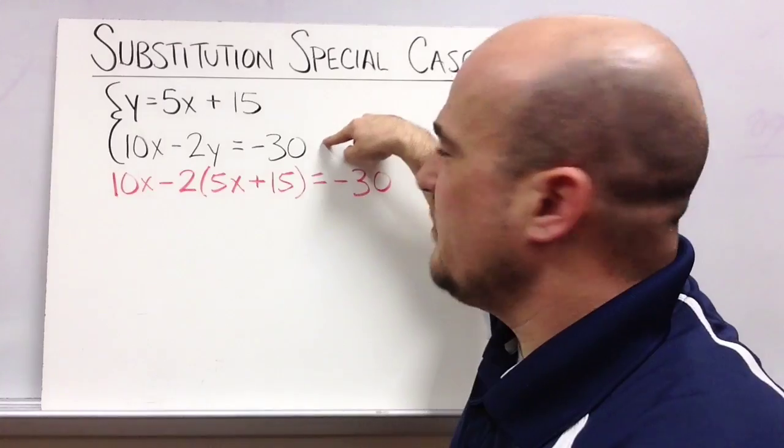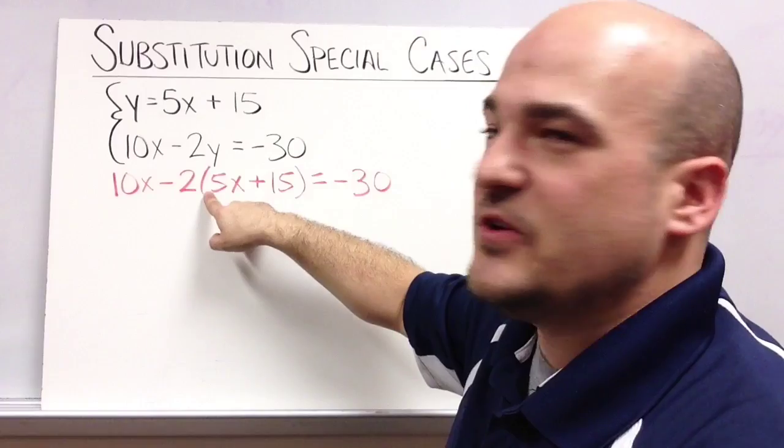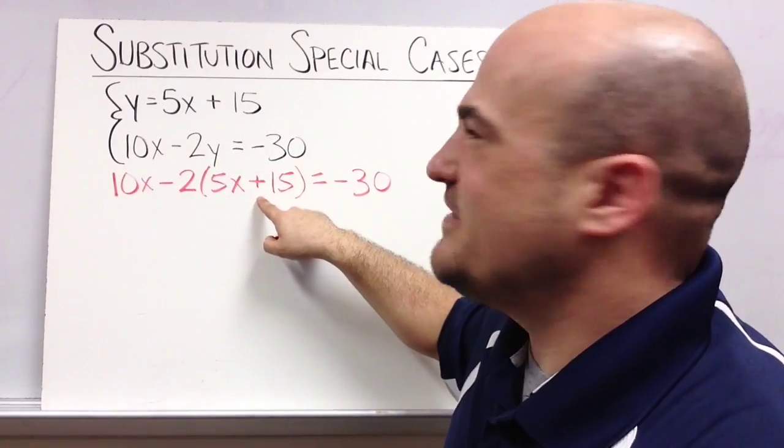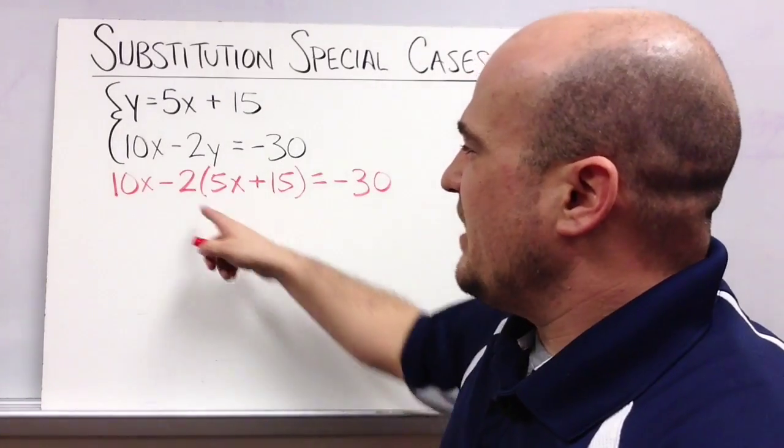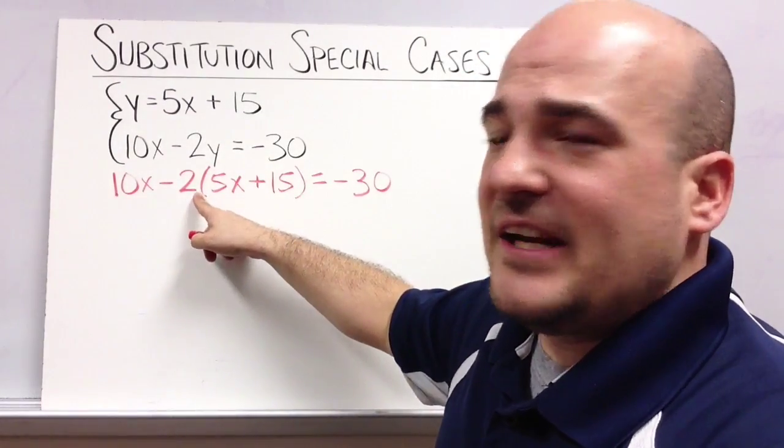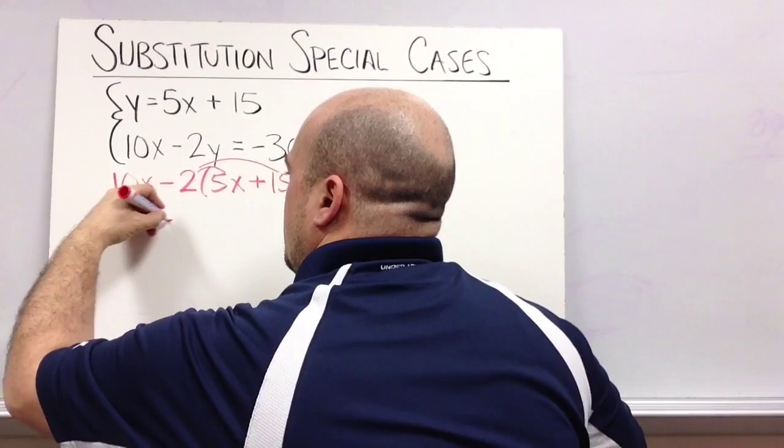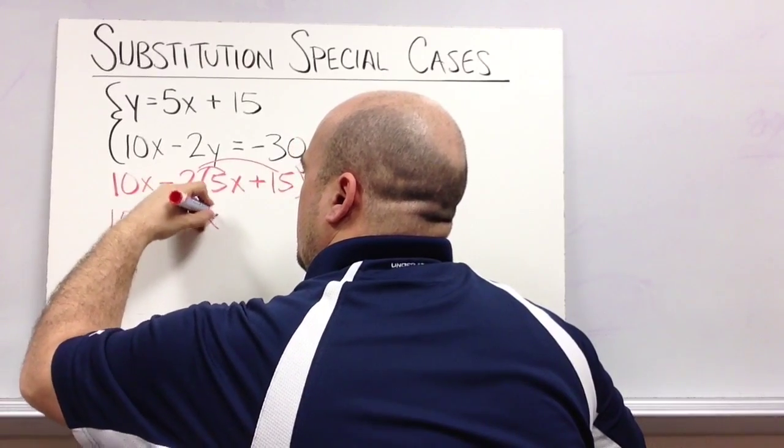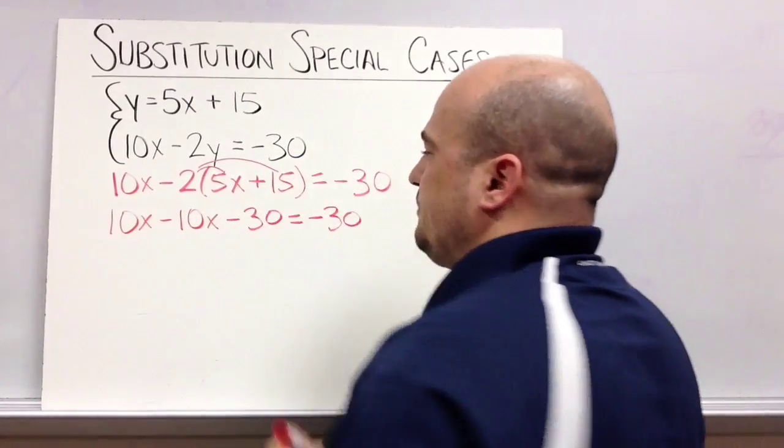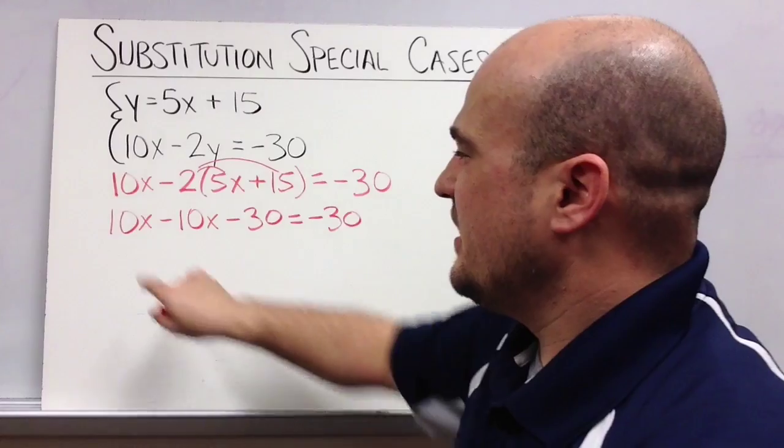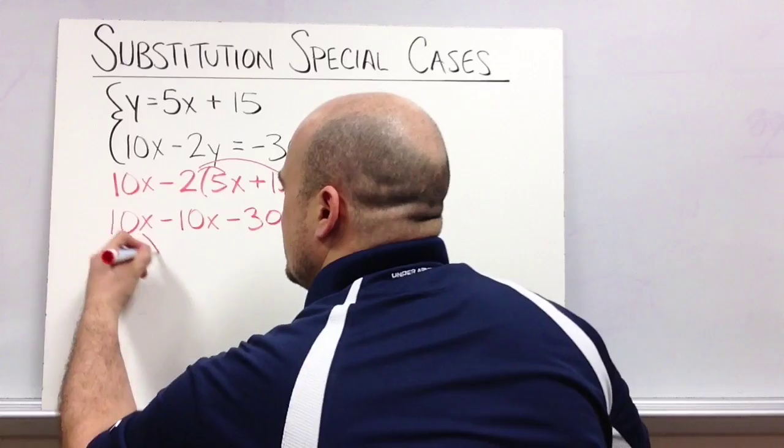Okay, so all I did was just rewrite this bottom equation, except instead of minus 2y, I did minus 2 times 5x plus 15, because I know that's what y is equal to. I just substituted it. So I use some algebra. I distribute my negative 2. And then I combine like terms. And again, in this case I've got 10x, and then I take away 10x. I'm left with no x or 0x.